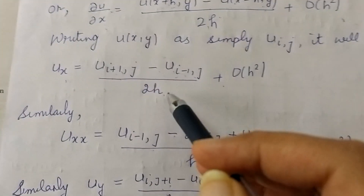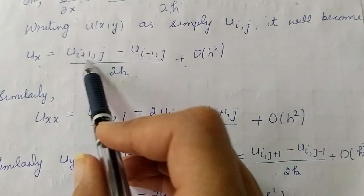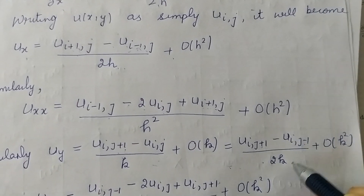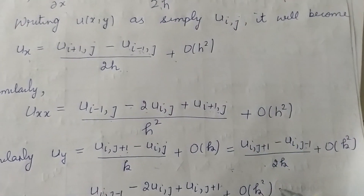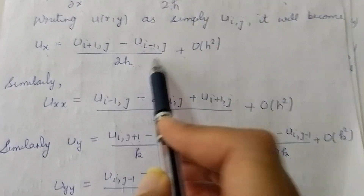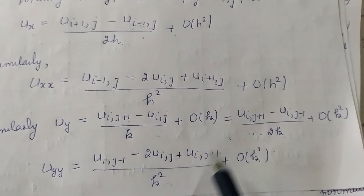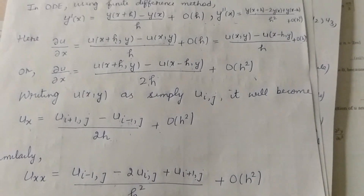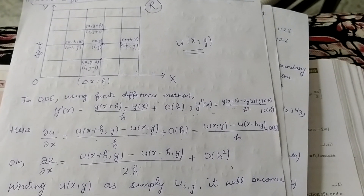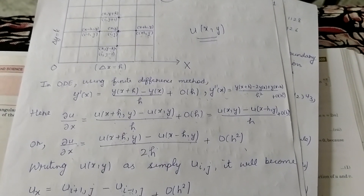Comparing the formulas: wherever there is i+1 in the x-derivative, there is j+1 in the y-derivative; subtraction in i corresponds to subtraction in j; 2h becomes 2k. So you have to remember these formulas: the first and second order partial derivative formulas with respect to x and y, all derived using the finite difference method from ordinary differential equations. Thank you.